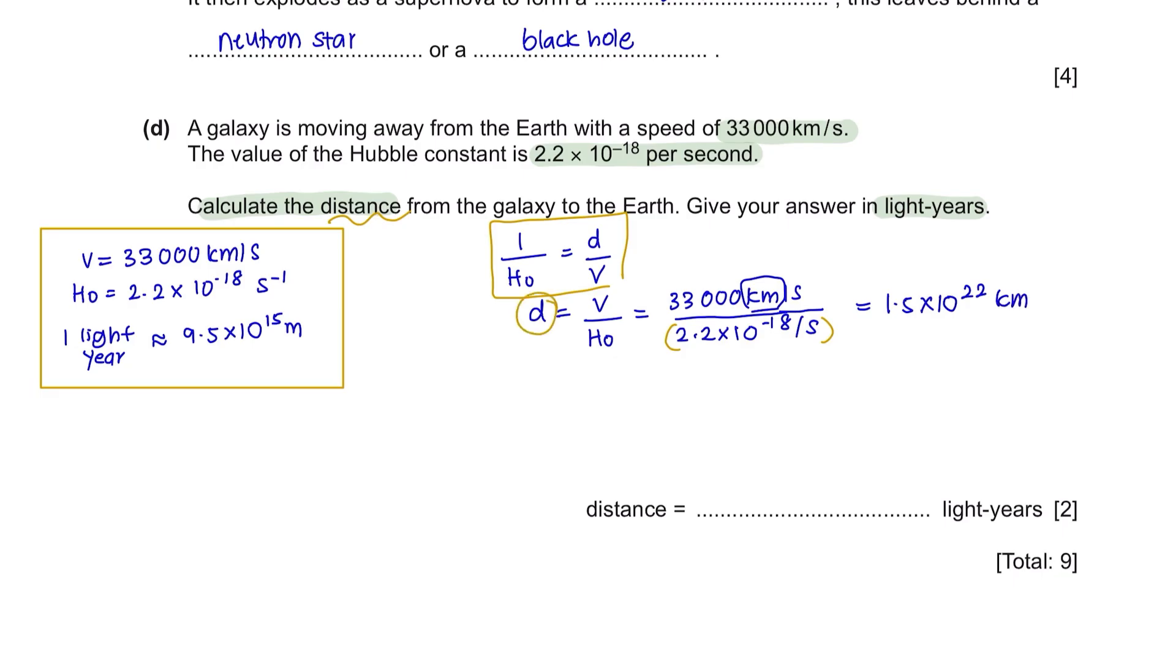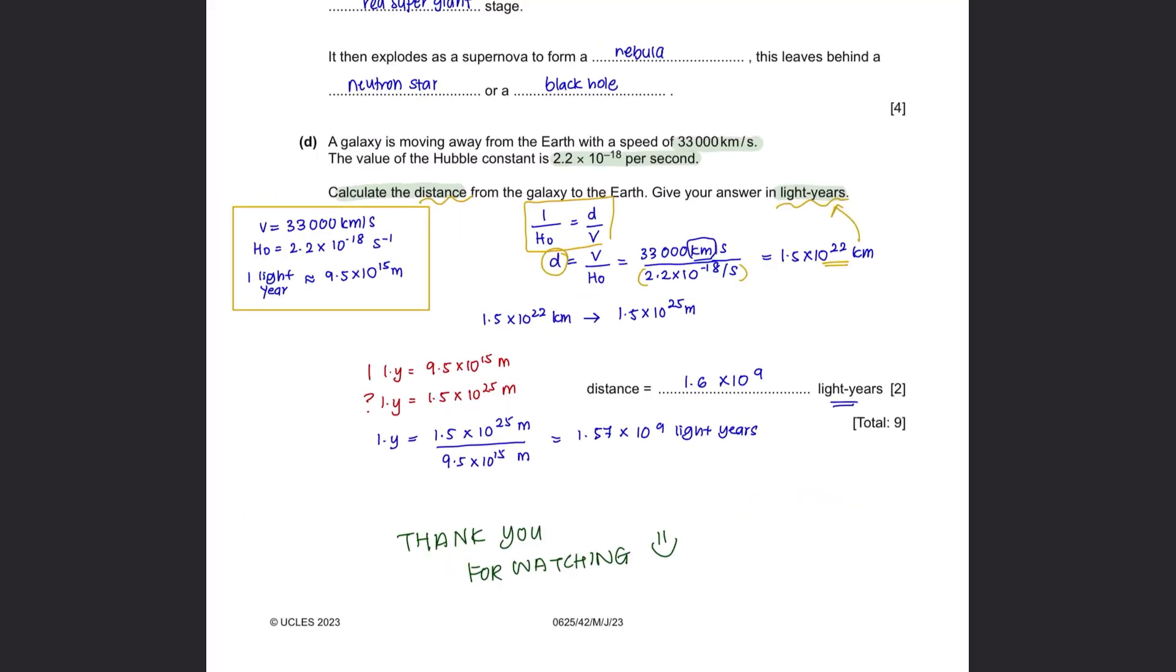We have got our distance in kilometers and now we have to convert it to light years. 1.5 times 10 to the power of 22 kilometers converted to meters would be 1.5 times 10 to the power of 25 meters. If 1 light year equals 9.5 times 10 to the power of 15 meters, then how many light years would 1.5 times 10 to the power of 25 meters be? Using your knowledge of maths, you should be able to obtain 1.5 times 10 to the power of 9 light years. I am just going to simplify this to 2 significant figures which is 1.6 and the final answer would be 1.6 times 10 to the power of 9 light years. Thank you for watching this video. I hope it was worth your time and if you have any questions, please ask me in the comment section below.